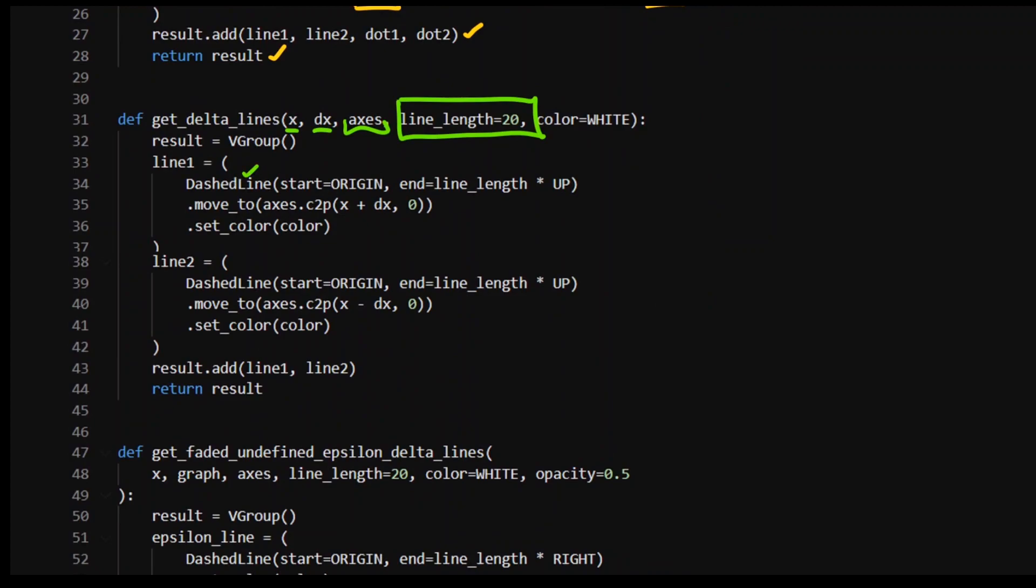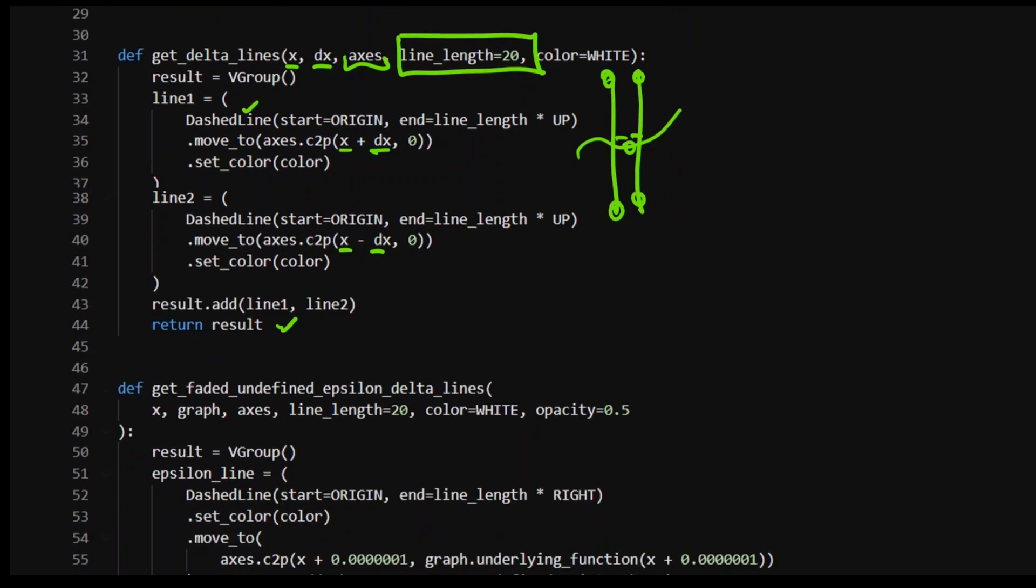Set the length first. So I want it to just be a nice long line that takes up the whole length of the screen. Then I'm going to move it to x plus dx. And then I'm going to have this one as x minus dx. So I'm going to have two lines about the graph point there. You've got dx there, dx there. And then return that. So that's going to be my delta line. So I've got my epsilon and delta lines that I can call.